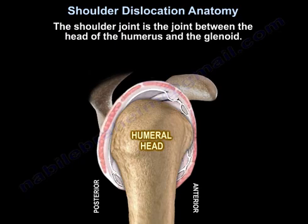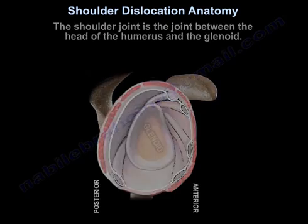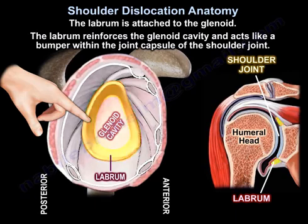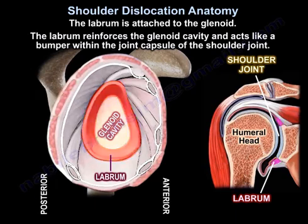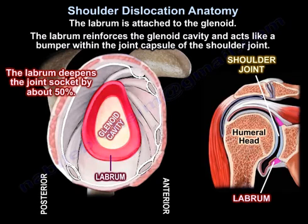The shoulder joint is the joint between the head of the humerus and the glenoid. The labrum is attached to the glenoid. The labrum reinforces the glenoid cavity and acts like a bumper within the joint capsule of the shoulder joint. It deepens the socket by about 50%.